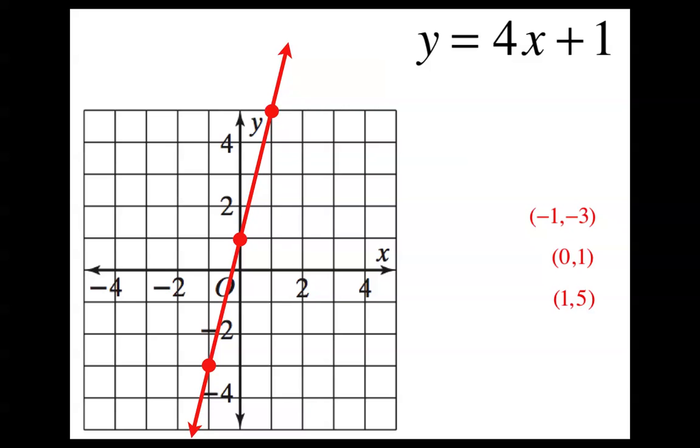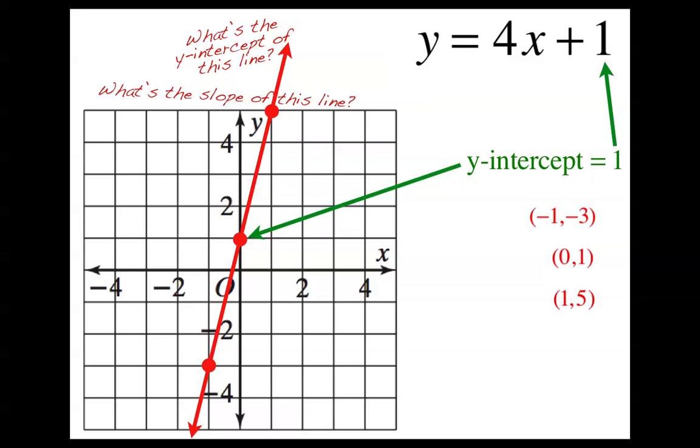And I want to ask you a couple questions about this line. First of all, what's the y-intercept of this line? The y-intercept is right there. The y-intercept is one. Kind of interesting. That equation had a one in it. Probably just a coincidence, though. Okay, what about the slope? What's the slope of this line? Oh, man, we've got to count it out. But we can do that. If you count from one dot to another, it goes up one, two, three, four, and then over one. The slope is four. Oh. There's also a four in the equation. There's a four and a one. That's probably not a coincidence, is it? No, it's not.